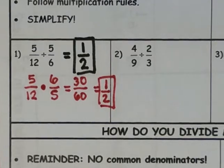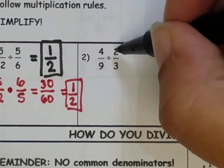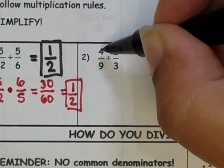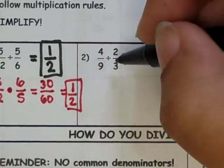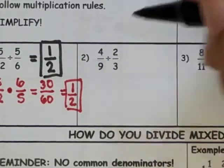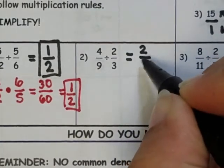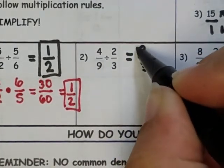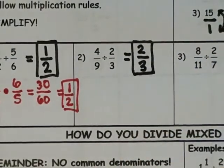Let's go to number 2. I look at my divisor and see if it's a factor of the dividend. 4 divided by 2 gives 2, and 9 divided by 3 gives 3, so the answer is 2 thirds. Easy peasy, lemon squeezy.